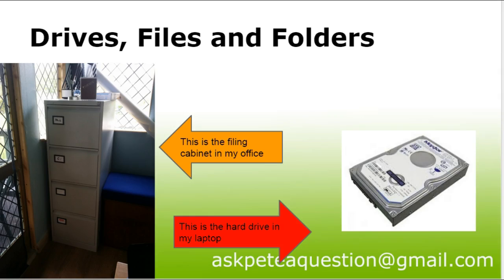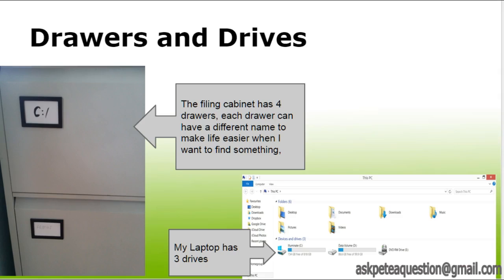The first topic was drives, files and folders. In the corner there is the filing cabinet that sits in my office — it's the bane of my life trying to keep it organised. On the other side we've got the hard drive from my laptop, where all my files and folders that I work with daily are stored. Each drawer in my filing cabinet can have a different name — so I've got one called C colon, one called admin, and a couple of others whose contents tend to just acquire all sorts of rubbish.